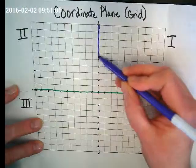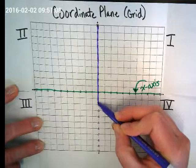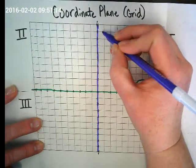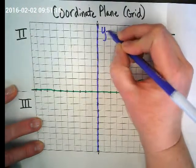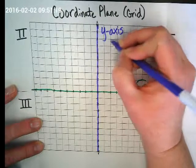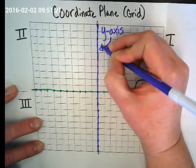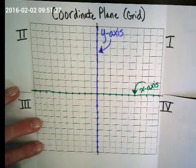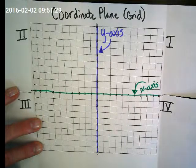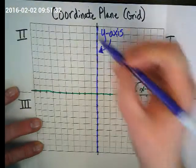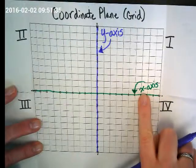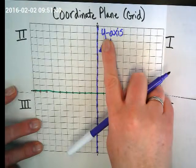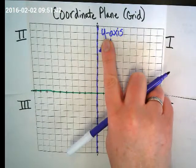And then a different color to color code going down. And this is the y-axis. And just use your finger, and in the air I want you to make a y. What does y's do? They go up and down. So that's how you can remember the x goes across, just like the x literally crosses itself. And the y-axis goes up and down, just like when you make a y, it goes up and down.